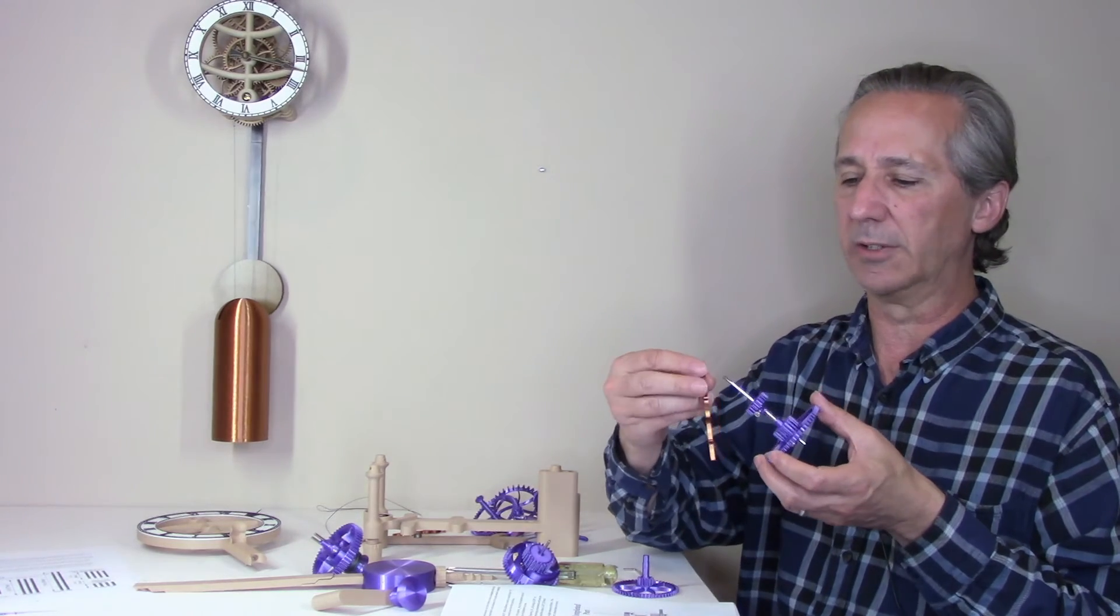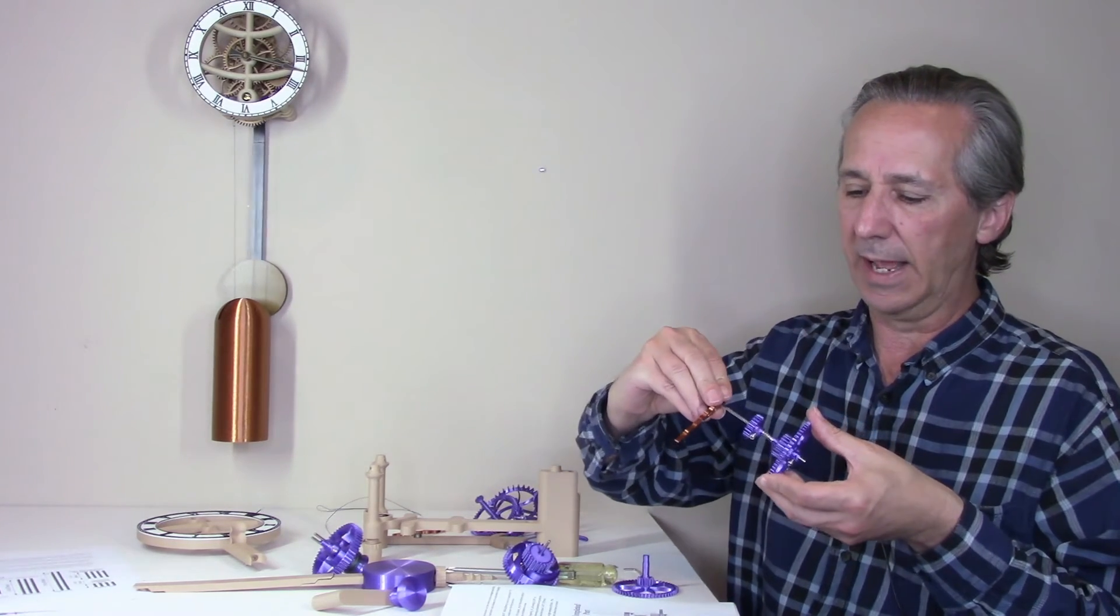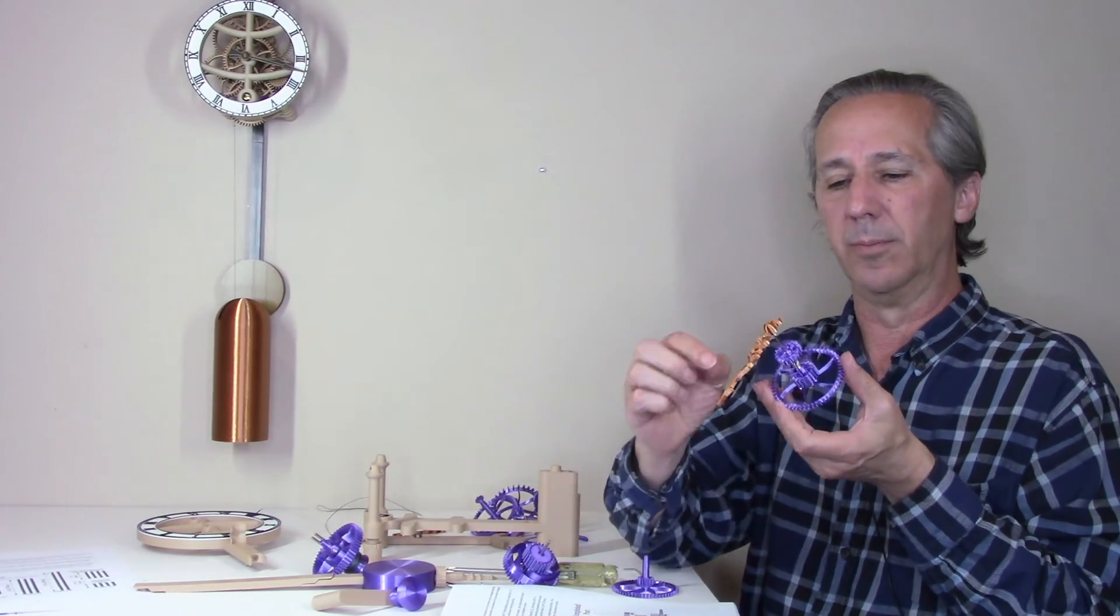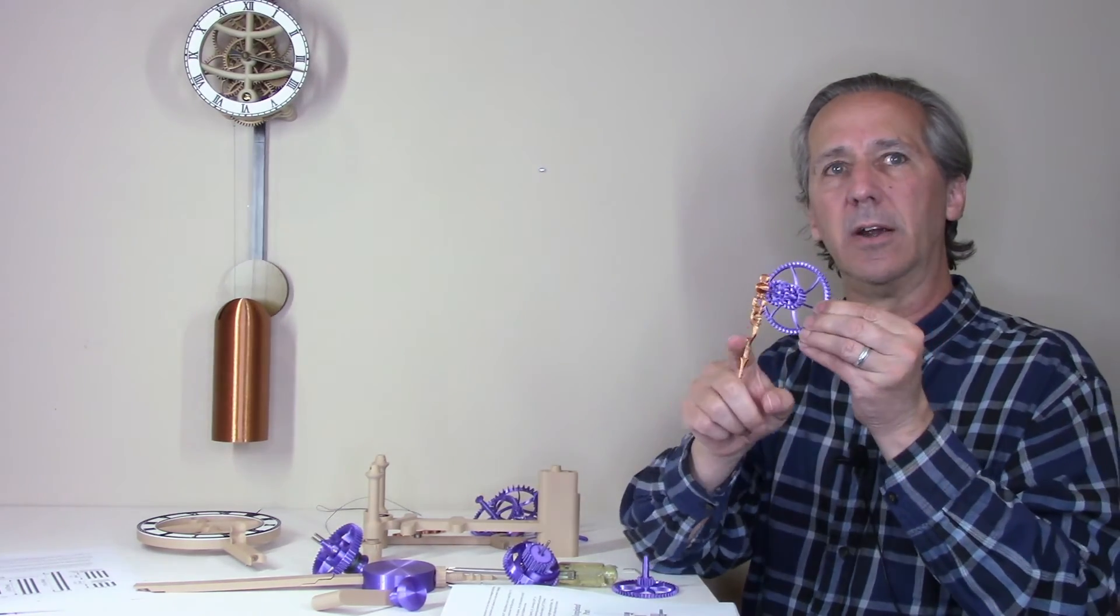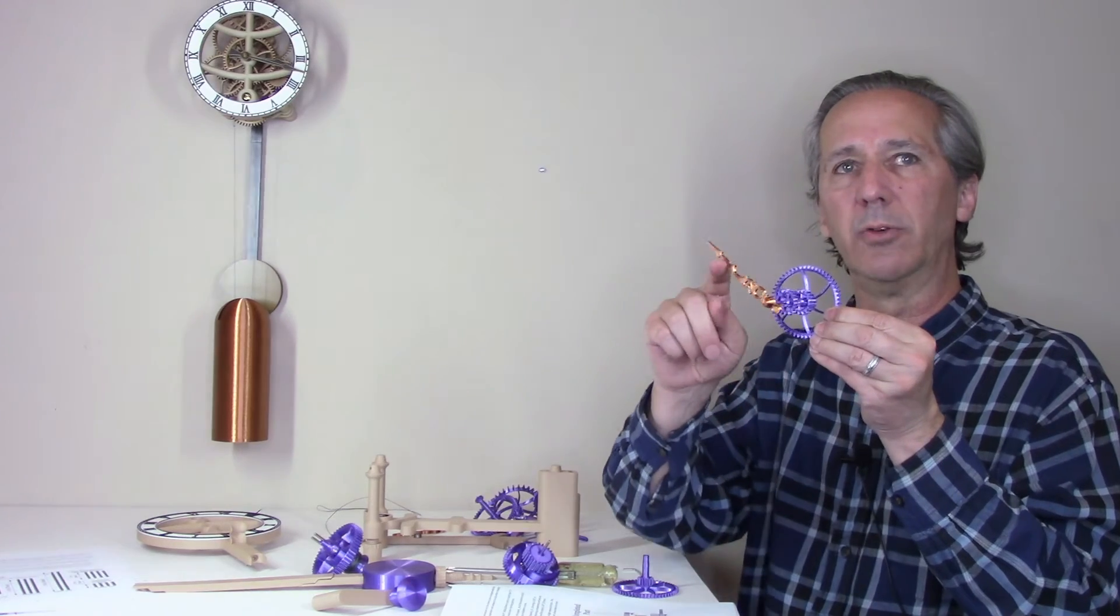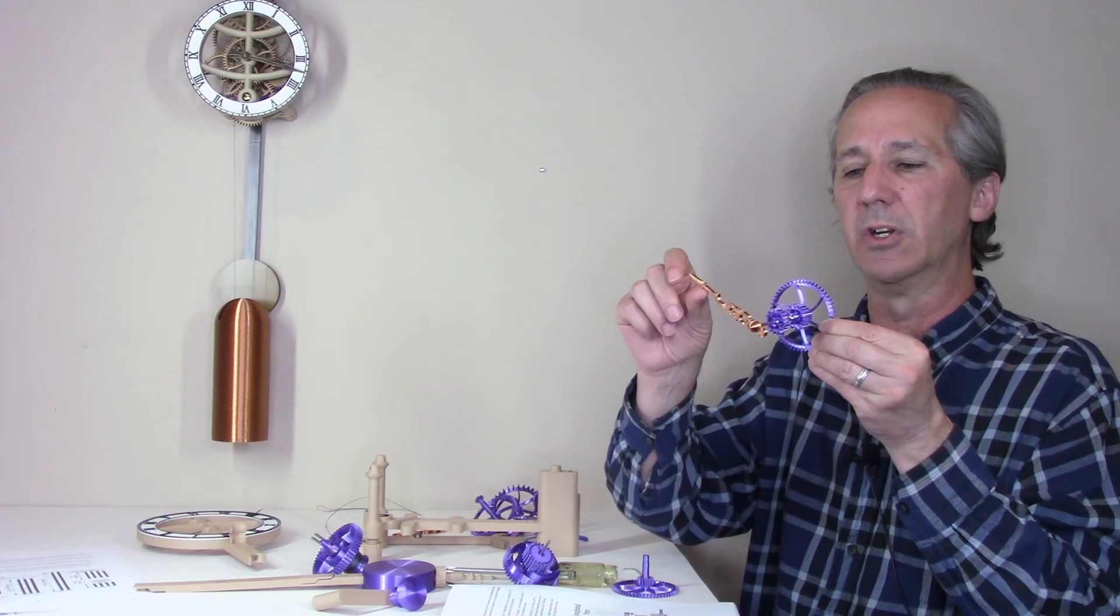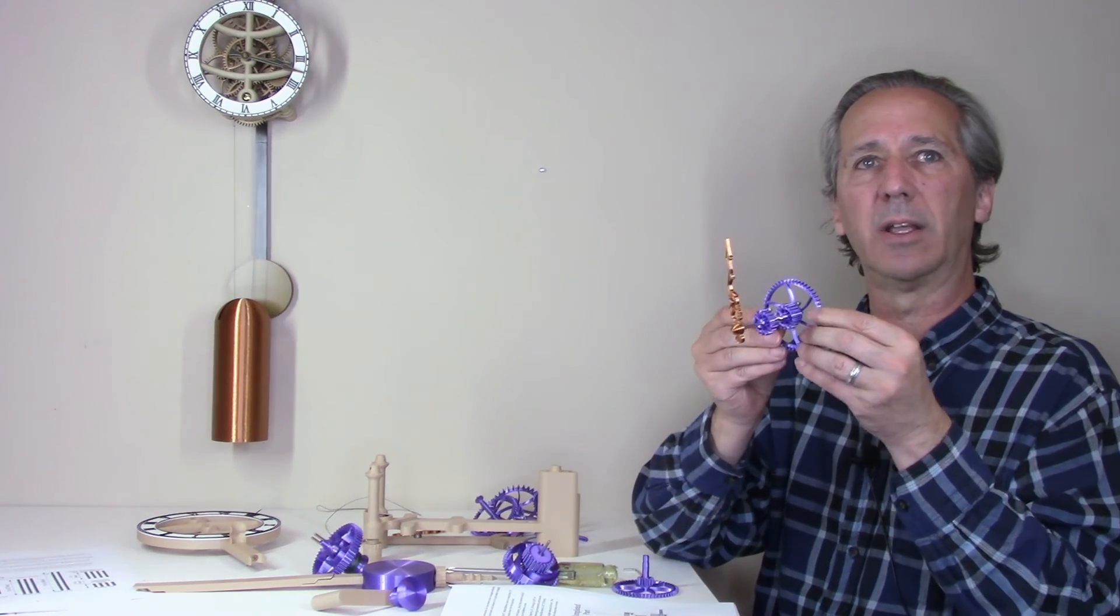I can show how the friction clutch works by adding the minute hand onto the arbor. I can hold the large gear. I'm able to rotate the minute hand, and that's what you would do when you're changing the time. When the clock is operating...